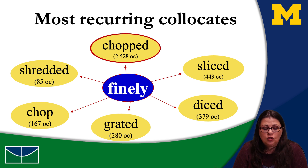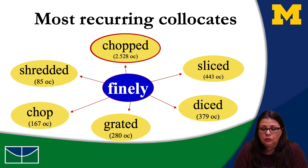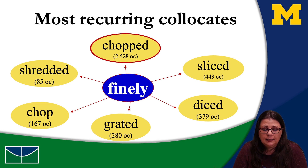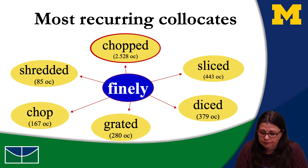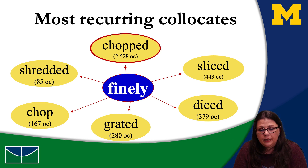Looking at all 3,000 occurrences, these are the most frequent collocates — the words that co-occur frequently with the word we are looking for. We have 'chopped' 2,500 times, then 'sliced,' 'diced,' 'grated,' and 'shredded.' So 'chopped' is the most recurring one. Let's have a look at 'chopped.'